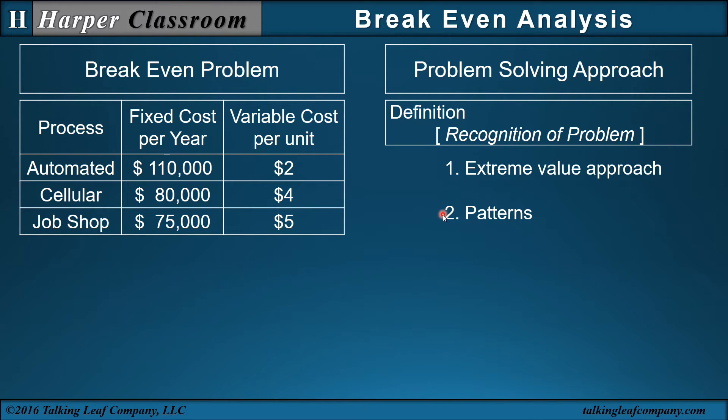The second is the patterns. When the fixed cost decreases as the variable cost increases, that pattern indicates a break even problem. For example, suppose the two and the five were reversed. In other words, the five is up here, and then the two comes down here. Then the job shop has the lowest fixed cost, and if the two is down here, then the job shop will have the lowest variable cost. Since the job shop has the lowest cost on fixed and variable cost, then there is no break even. The job shop is always the lowest cost.